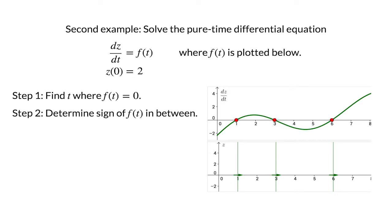For the second step, we determine the sign of the derivative in between those zero derivative points. For t less than 1, we see that the derivative is negative, so z(t) must decrease in the first interval.